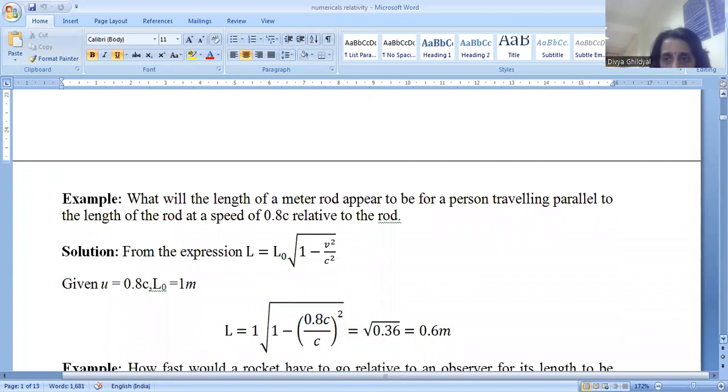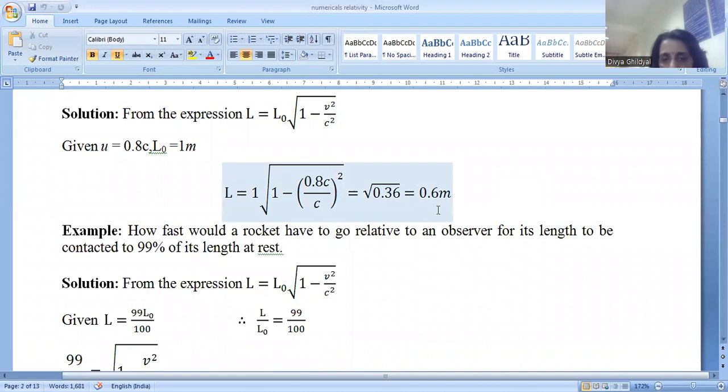Let us begin with the numerical. All these numericals have been asked repeatedly in your AKTU exam. What will be the length of a meter rod appearing to a person traveling parallel to the length of rod at a speed of 0.8c relative to the rod? Now, let us have a look. They have given v as 0.8c. That means v you will put in this formula equal to 0.8c, and c is velocity of light. It will get cancelled by the denominator of c square here. We have been given length of a meter rod, so L not is equal to 1 meter. Putting these numerical values in the expression, I get L is 0.6 meter. It means this is less than 1 meter. Hence, my answer is correct.